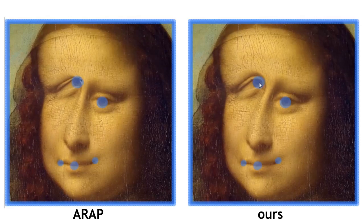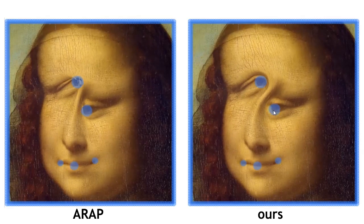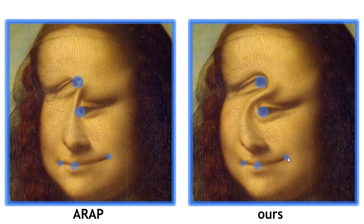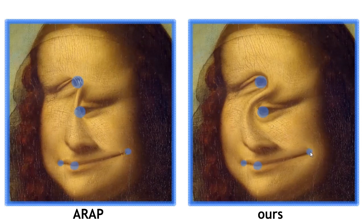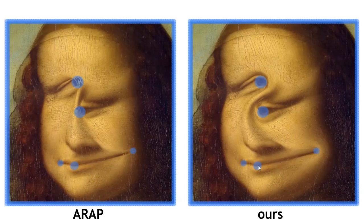In this example, we fix the boundary and use a few handles to deform an image. Note that in this case, preventing inverted elements implies that the computed map is guaranteed to be bijective.